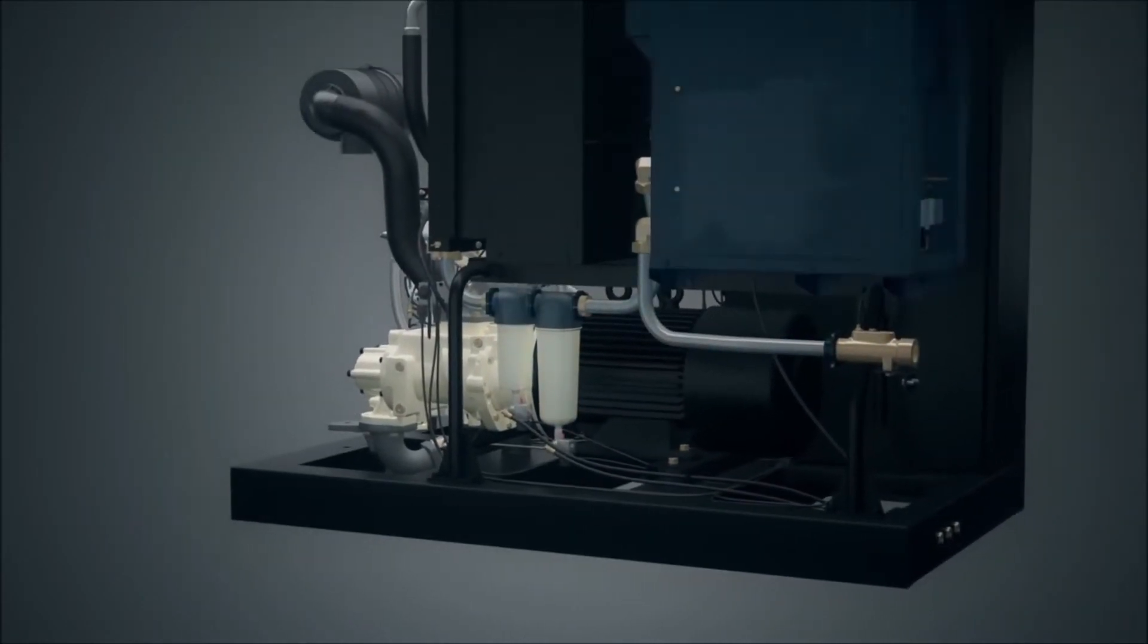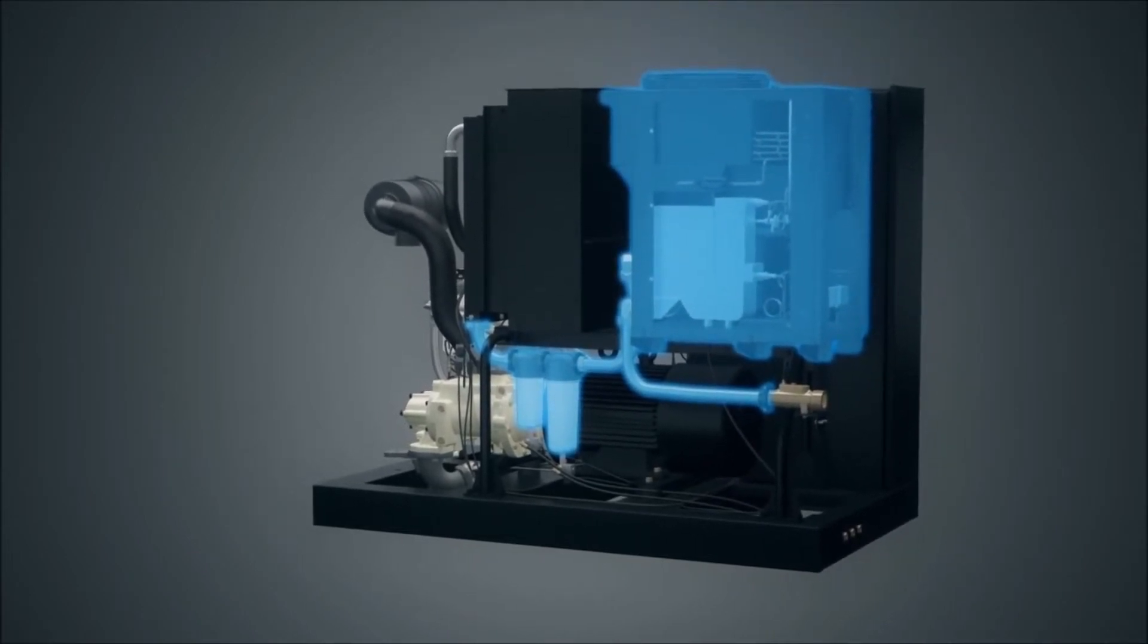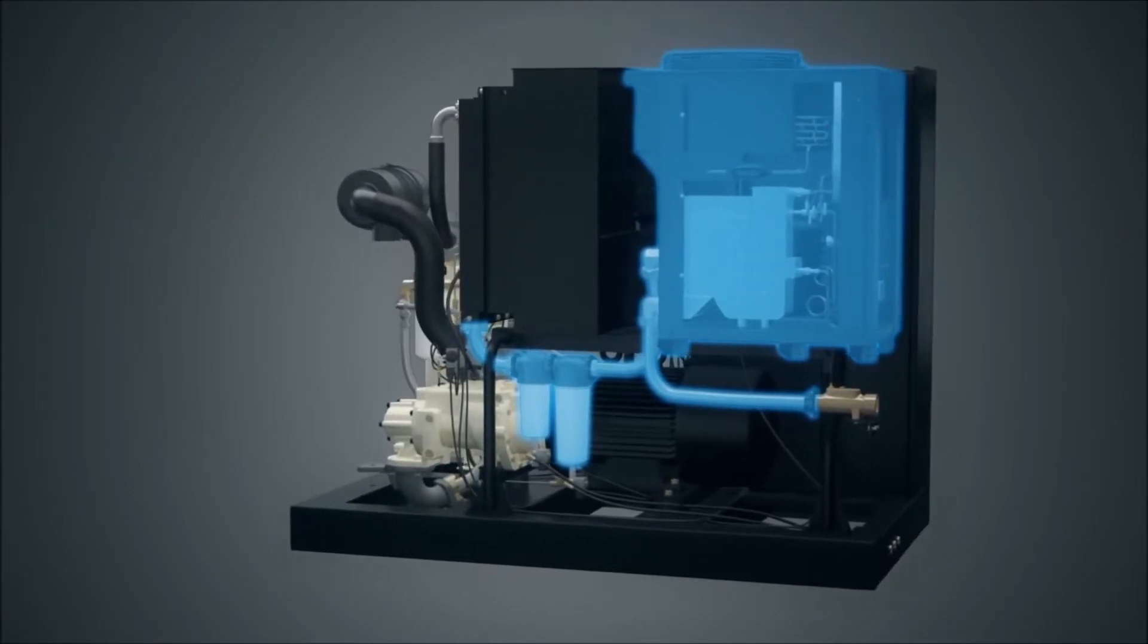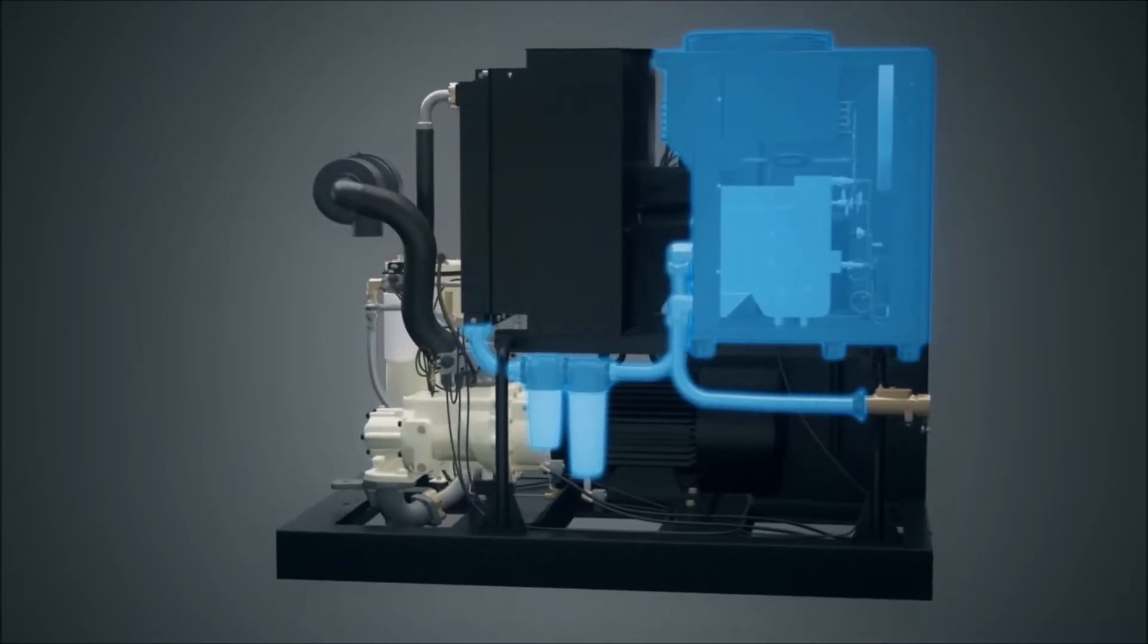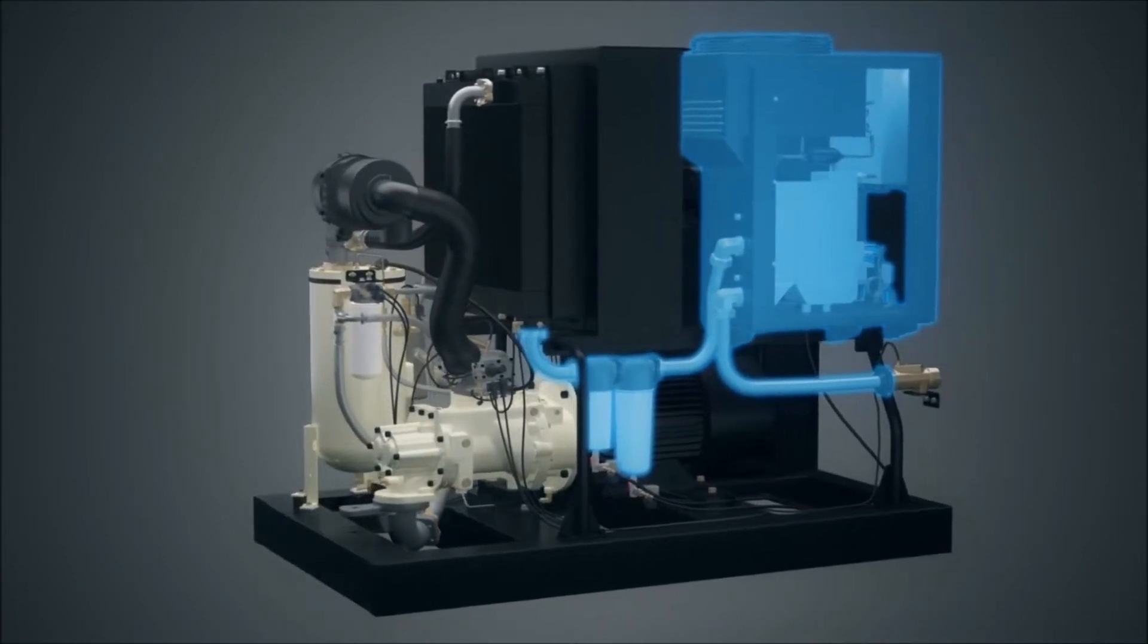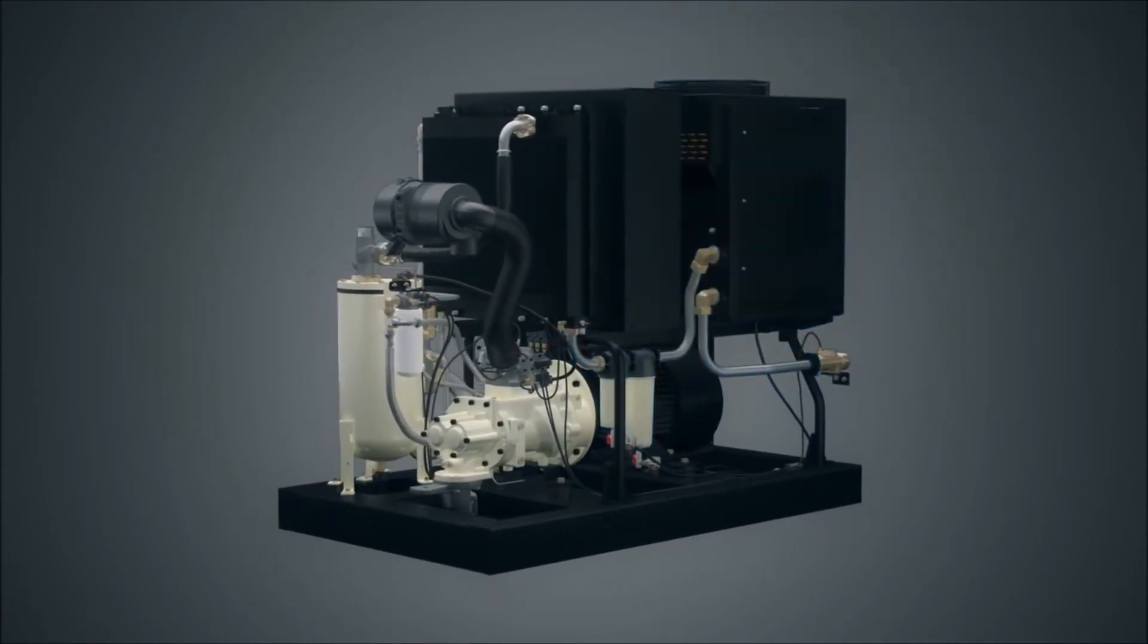This includes an integrated refrigerated dryer, heat exchanger, and coalescing filter to provide clean, dry air in a single package with the smallest footprint. The total air system also uses a more environmentally friendly refrigerant that can reduce energy consumption by up to 10% for the dryer module.